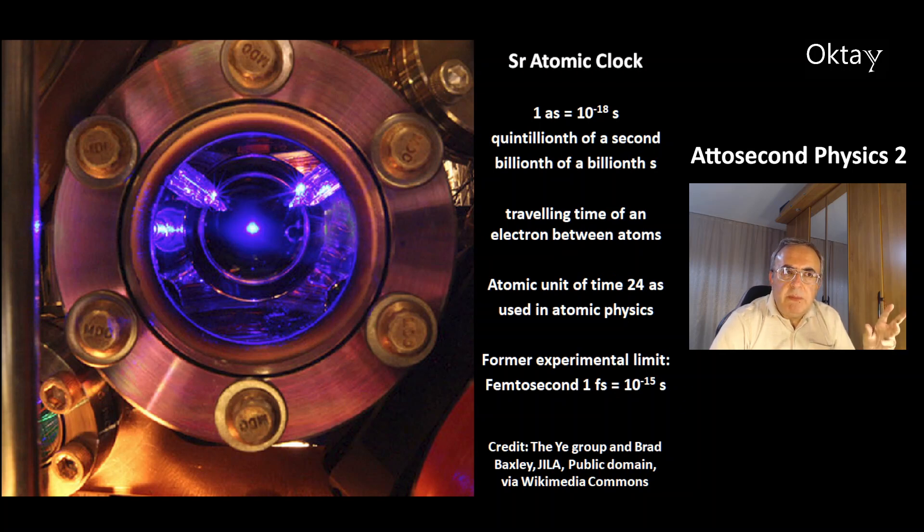The traveling time of an electron between atoms is in this time period of attoseconds. There is an atomic unit of time, which is 24 attoseconds. This is used in atomic physics.